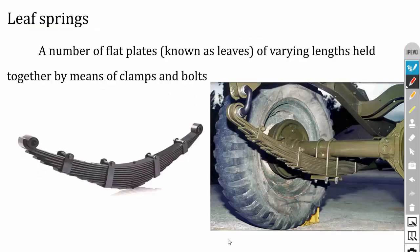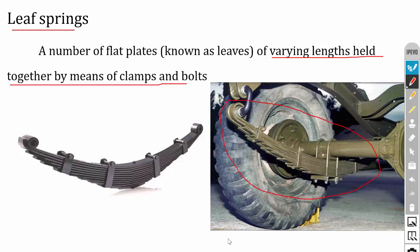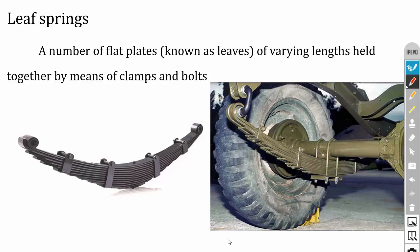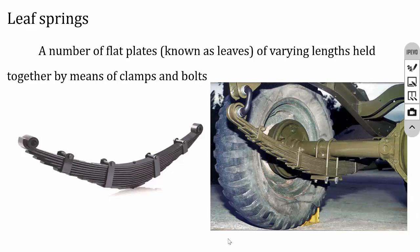Leaf springs are very important in four-wheelers. They are used in four-wheel suspension systems to resist high amounts of force. Varying-length leaves are held together by bolts and clamps to apply the load. Leaf springs are seen in buses and trucks for carrying heavy loads, though they don't provide as good a cushioning effect as helical springs. That is why two-wheelers and some cars use helical compression springs for better suspension.